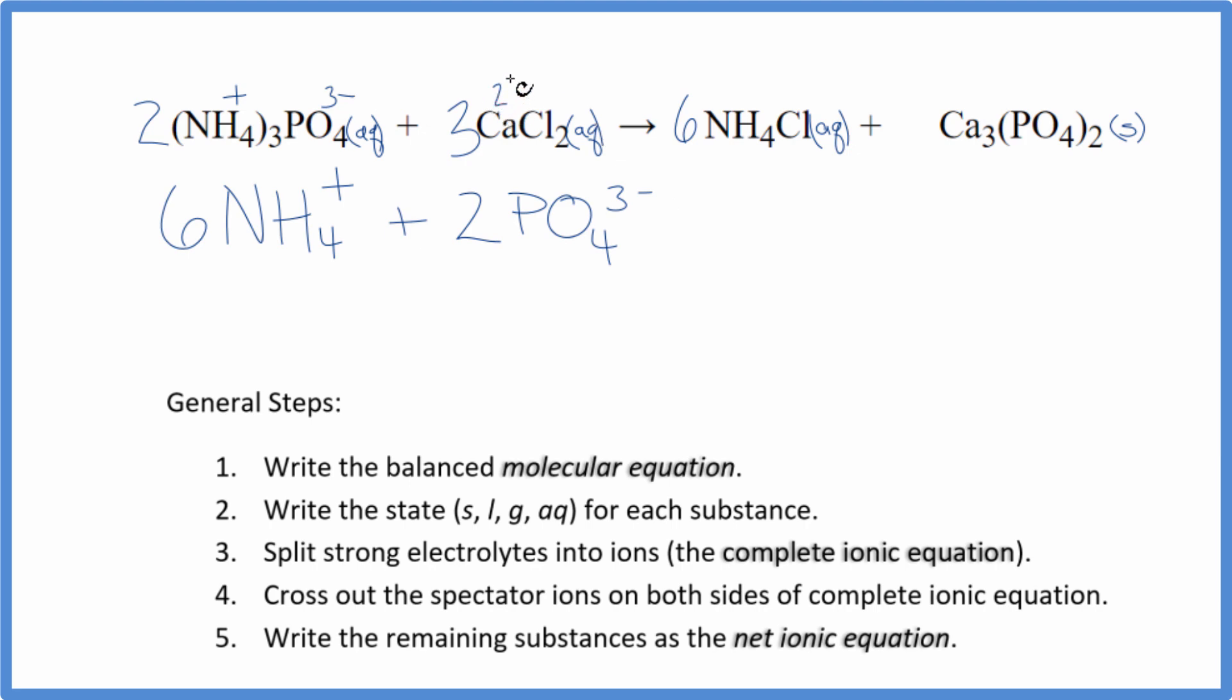Calcium's in group two, that has a two plus ionic charge. Chloride ion, one minus. Three calcium ions. And then for the chloride ion, we have three times two, so we have six chloride ions. And those are the reactants in our net ionic equation.